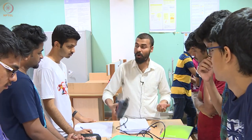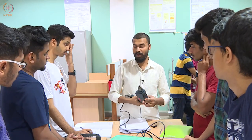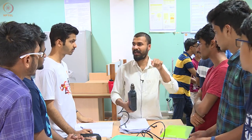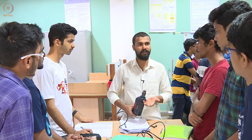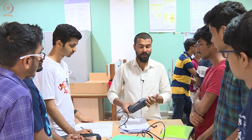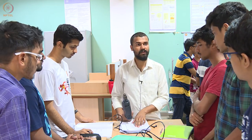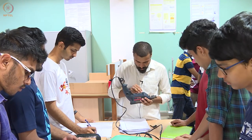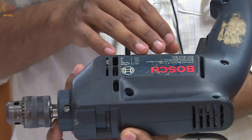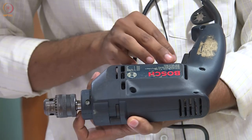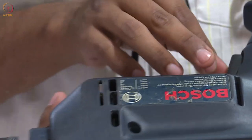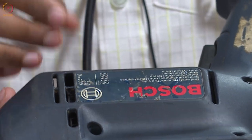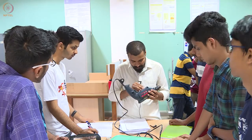How do we get the torque of this machine? You find the force, find the radius at which the force is acting, and calculate the torque. From the torque, you find the power. It is given that it is operating at 220 volts, 50 Hz — that is, it is operating on AC. The second thing given is the RPM.